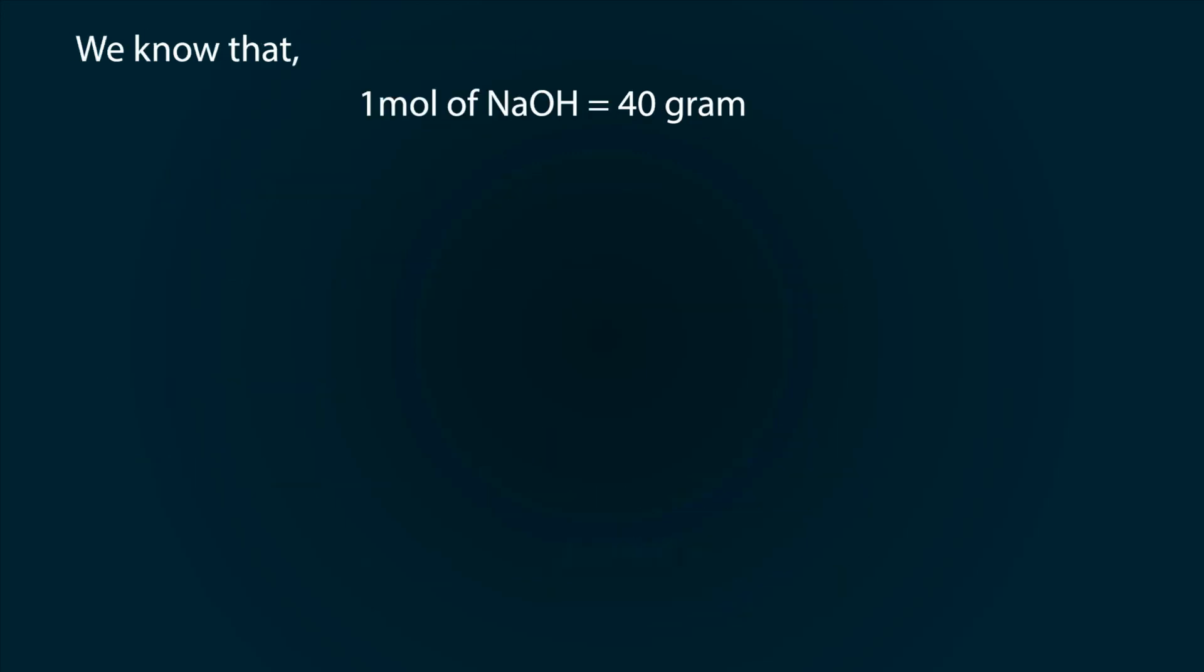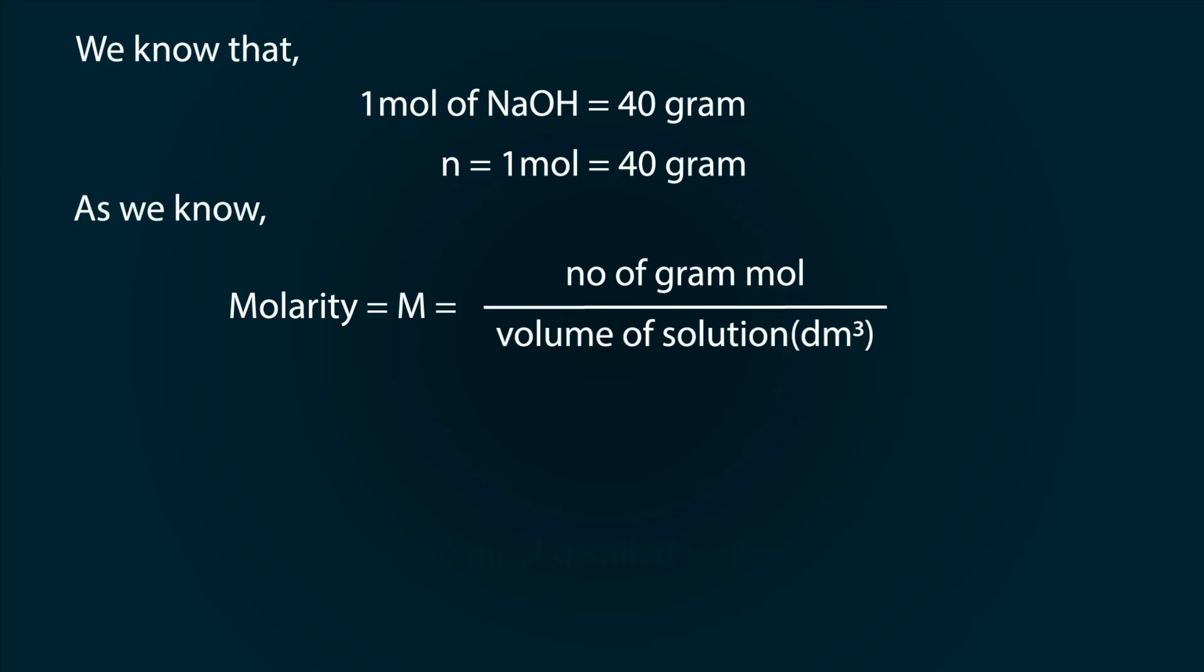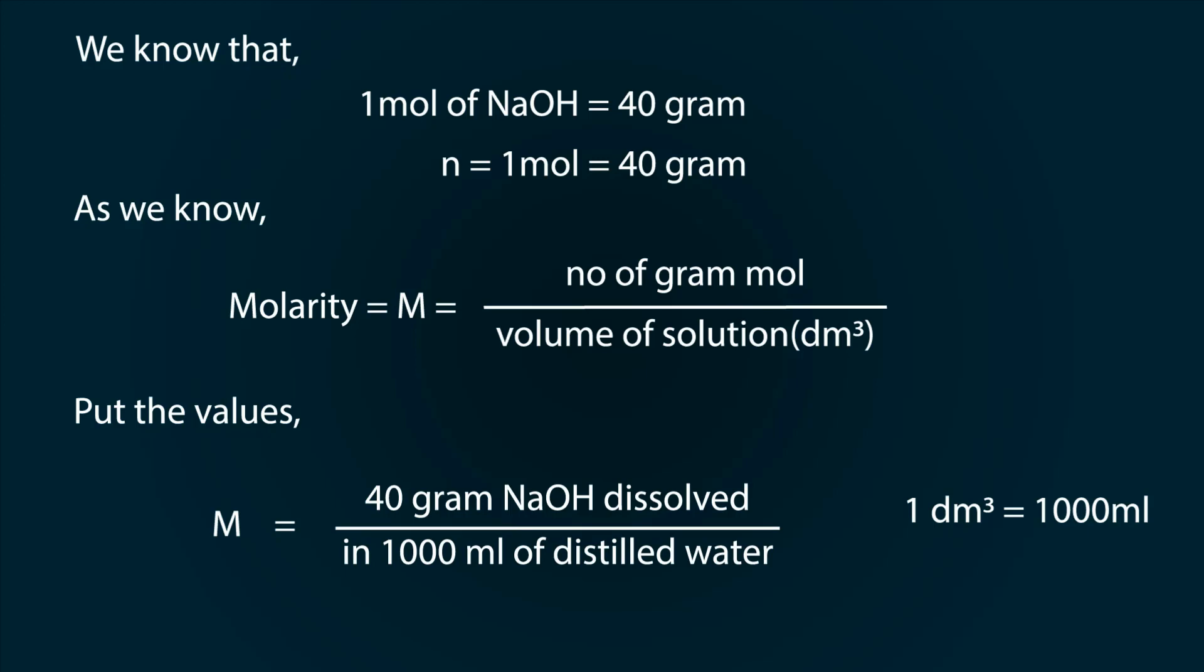We know that 1 mole of NaOH contains 40 grams. The formula of molarity is number of grams mole divided by volume of solution in dm³. We also know that 1 dm³ is equal to 1000 milliliters. By putting our values as 40 grams of NaOH divided by volume as 1000 milliliters, we get our molarity from the formula.